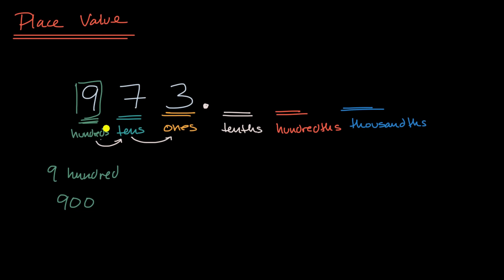And so, for example, if I were to extend this number, instead of it just being 973, if I were to write 973.526, what do these numbers, these digits represent? This five doesn't just represent five, it represents five-tenths.